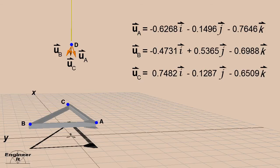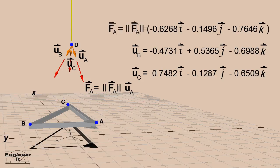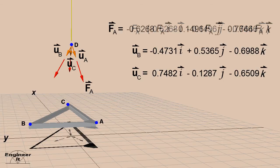These unit vectors are pointers that define the direction and line of action of the force vectors. Solve for the force FA by scaling the unit vector by the magnitude of the force vector FA. Using the regular FA without the vector symbol to represent the magnitude of force FA. Then multiply through with FA.